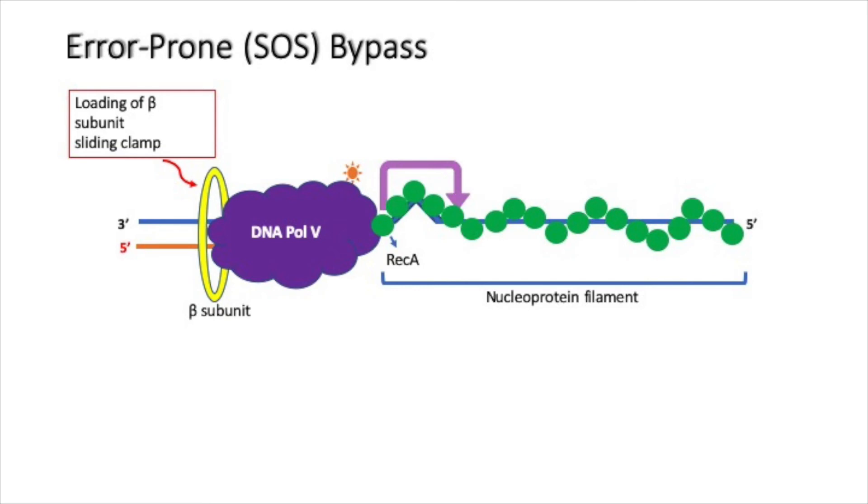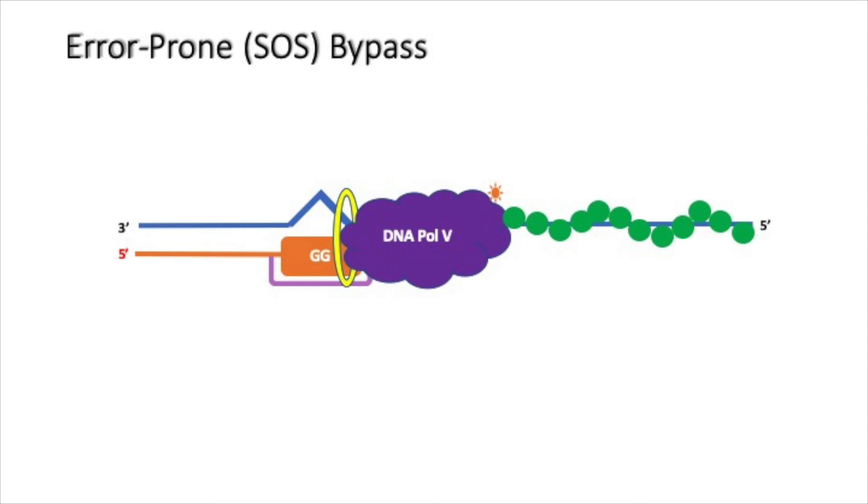RecA forms a nucleoprotein filament in an ATP-dependent manner. While synthesizing DNA across from the damaged region, DNA polymerase 5 inserts random nucleotides into the newly produced DNA strand, causing mutations.